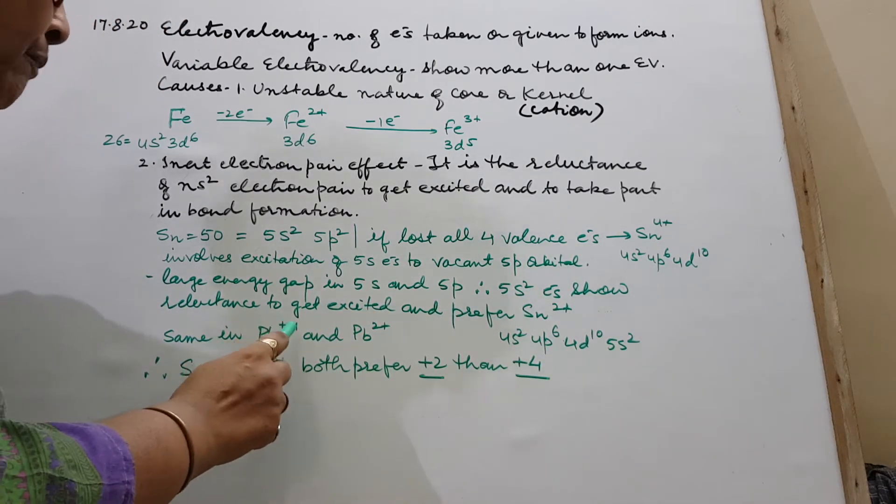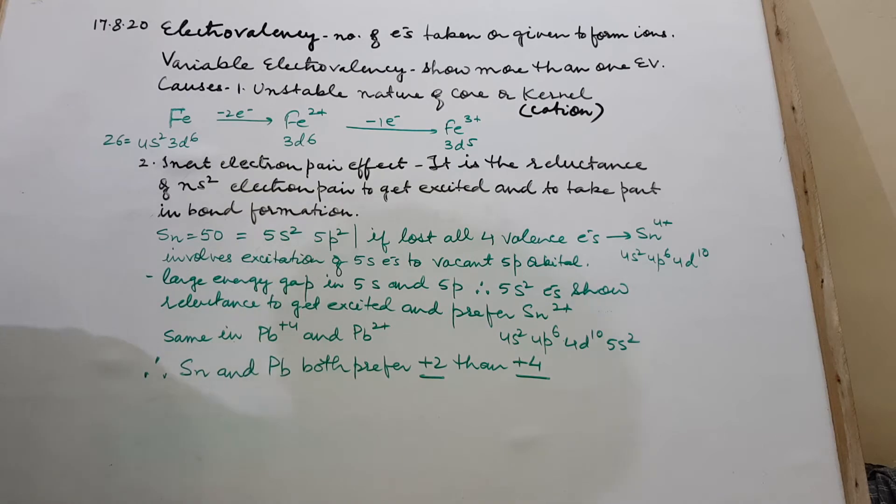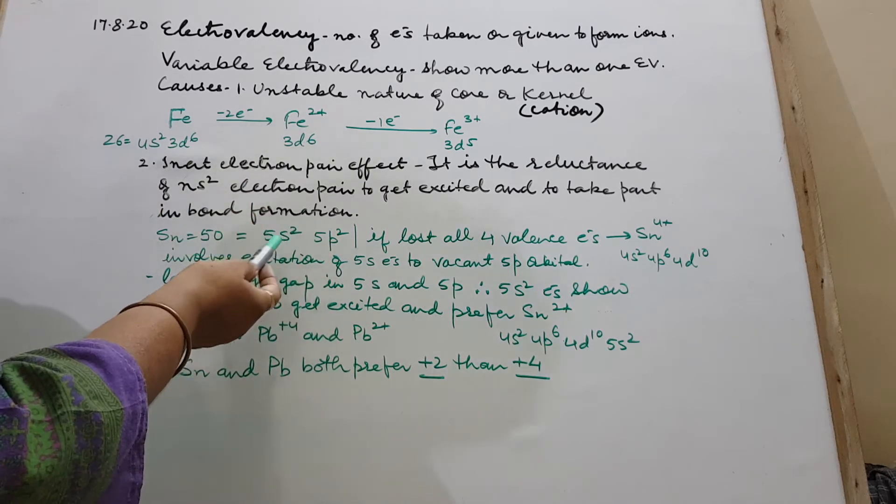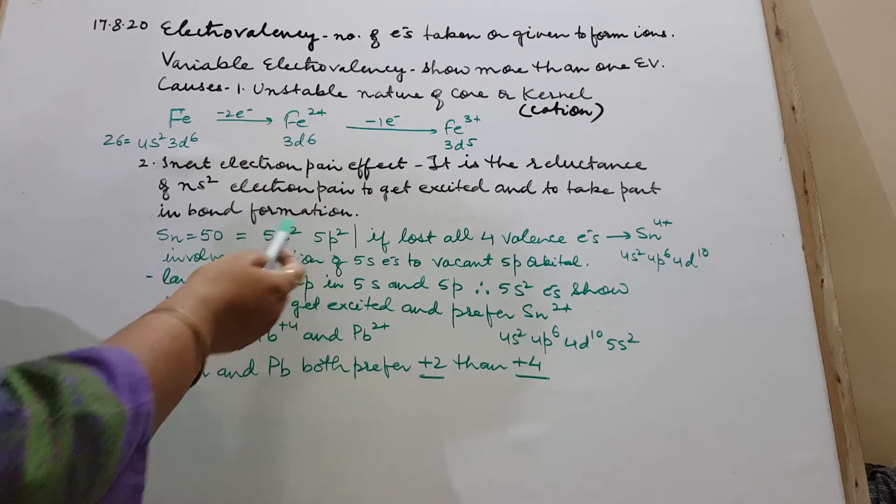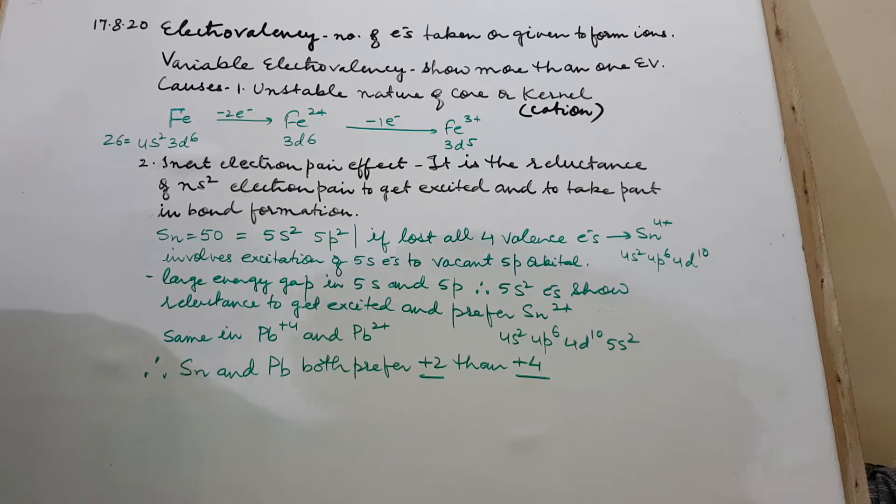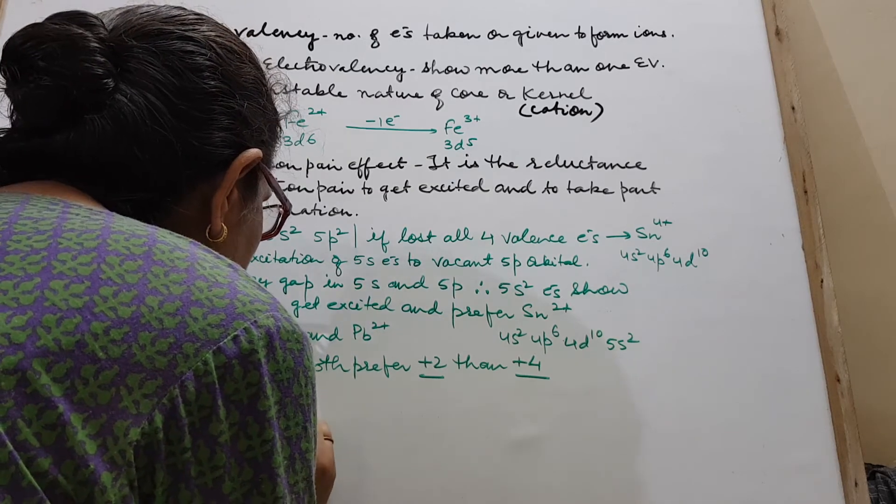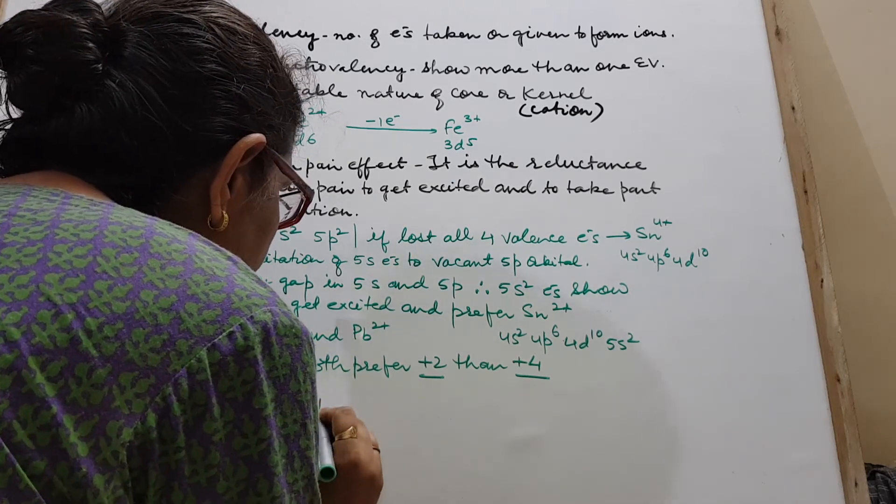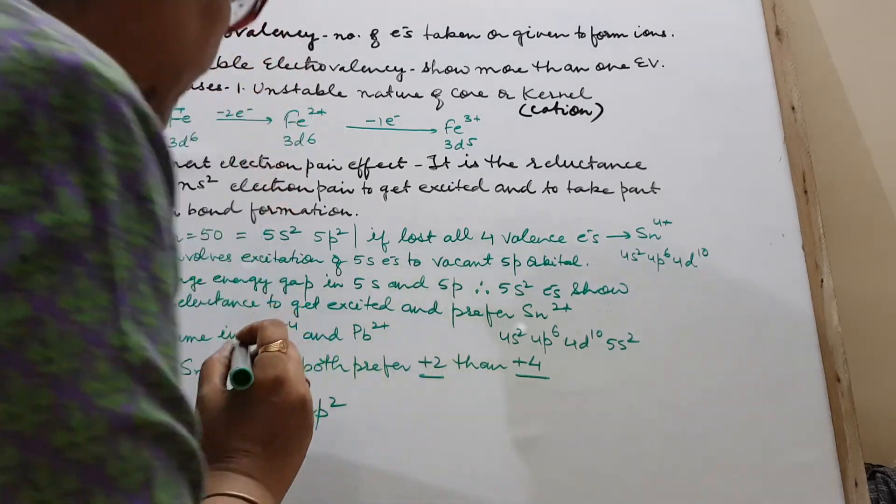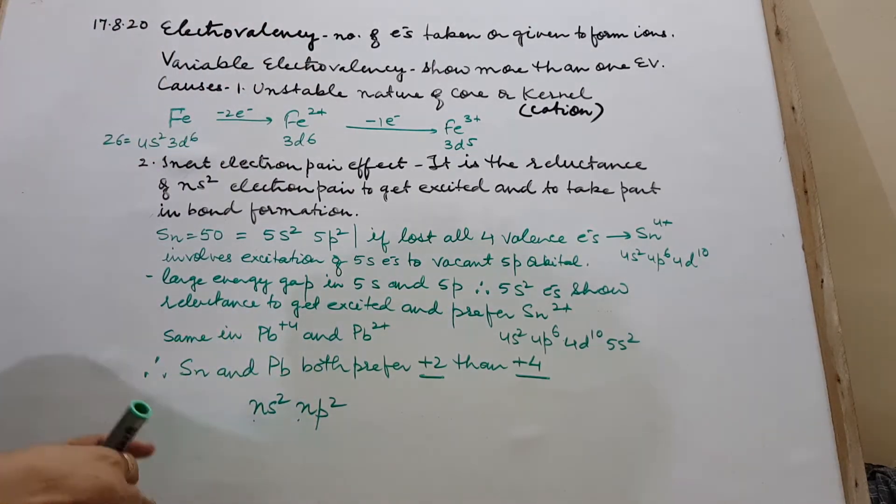Same in the case of Pb plus 4 and plus 2. Pb also belongs to group 14. It will also have the configuration like s2 and p2. Whichever, like here it is 5s, 5p, it can be 6s, 6p. Right? So what happened? Here too also, the configuration is ns2 and p2. Whatever n is there, we are not concerned. This is group 14 elements.